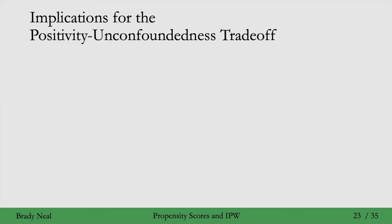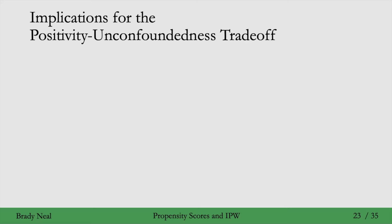The propensity score has pretty big implications for the positivity-unconfoundedness tradeoff that we saw back in week 2. For this tradeoff, recall that the overlap decreases with the dimensionality of the adjustment set. We get more likely to have positivity violations or existing positivity violations get worse.